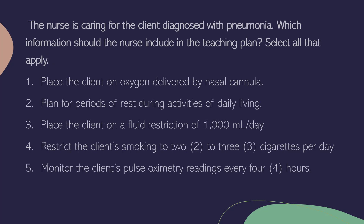The nurse is caring for a client diagnosed with pneumonia. Which information should the nurse include in the teaching plan? Select all that apply. 1. Place the client on oxygen delivered by nasal cannula. 2. Plan for periods of rest during activities of daily living. 3. Place the client on a fluid restriction of a thousand milliliters a day. 4. Restrict the client's smoking to 2 to 3 cigarettes per day. 5. Monitor the client's pulse oximetry readings every 4 hours. This is an analysis question in the planning phase of the nursing process — it is also a select all that apply question, so look at each answer individually.